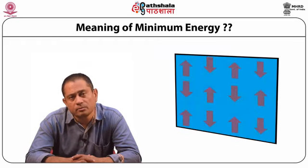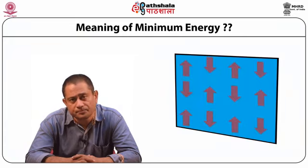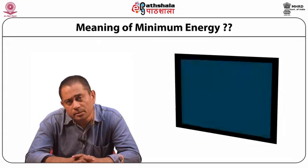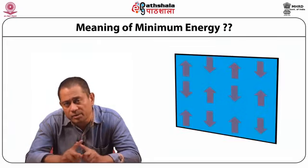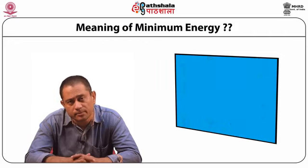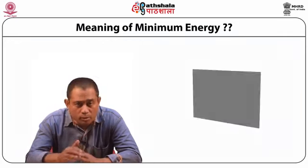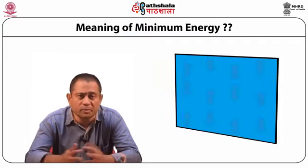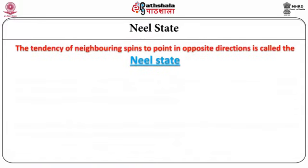Now look at this figure. The meaning of minimum energy is very clear from here — this is basically the Neel state. You see here this is typically what we describe in the anti-ferromagnetic case: the nearest neighbor spins have opposite directions — up spin, down spin, then again up, then again down, both in the vertical and horizontal sense. This is basically a Neel state.